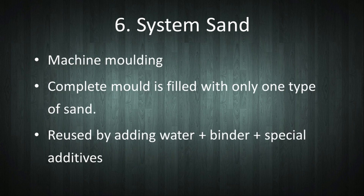The next sand is system sand. In machine molding, it is not possible to use facing sand and backing sand separately. For mass production, system sand is used to fill the complete mold. This sand is reused by addition of water, binder, and special additives.